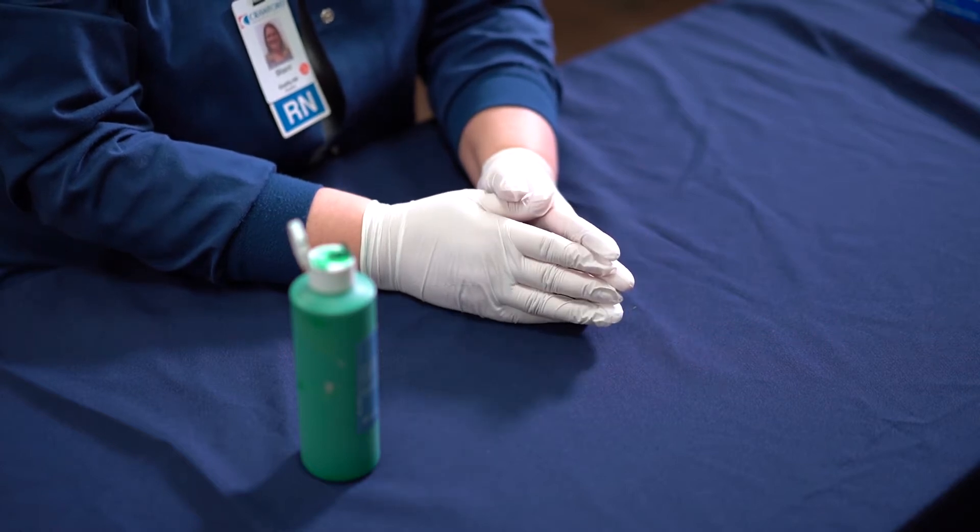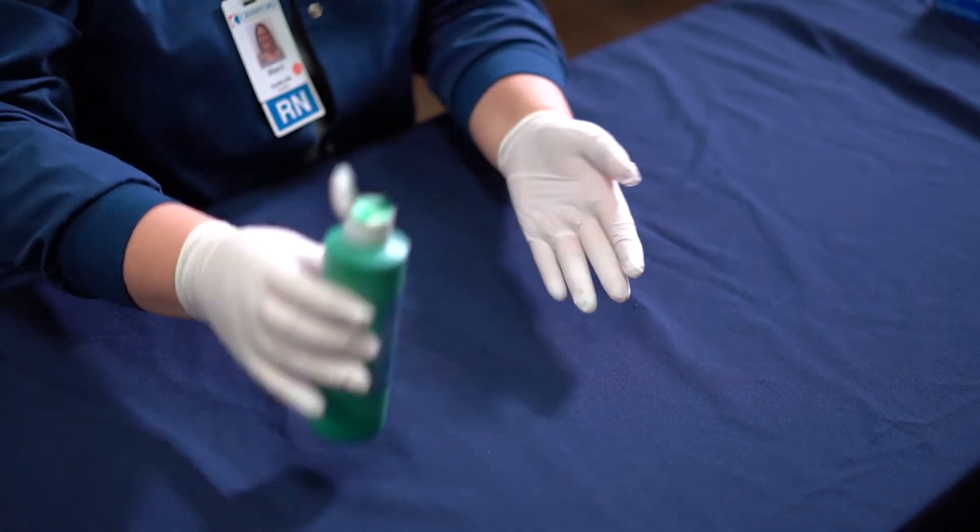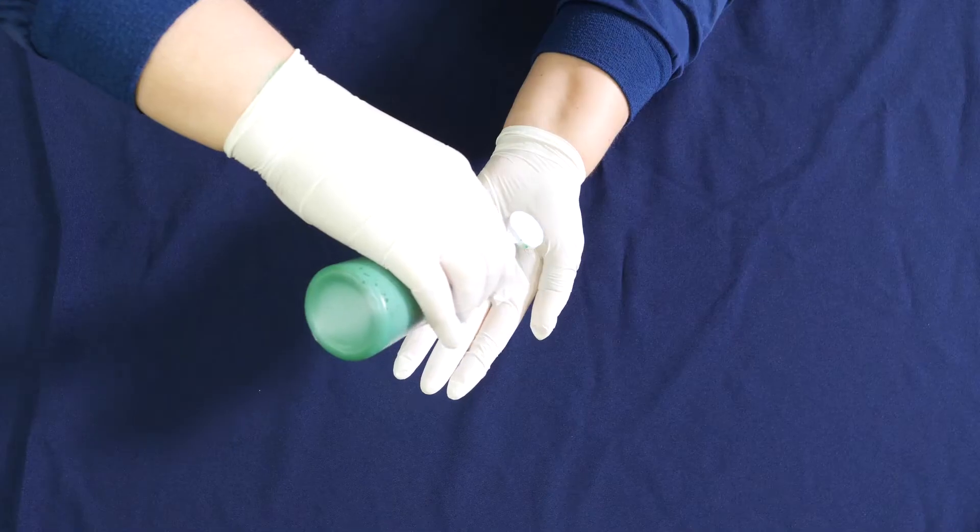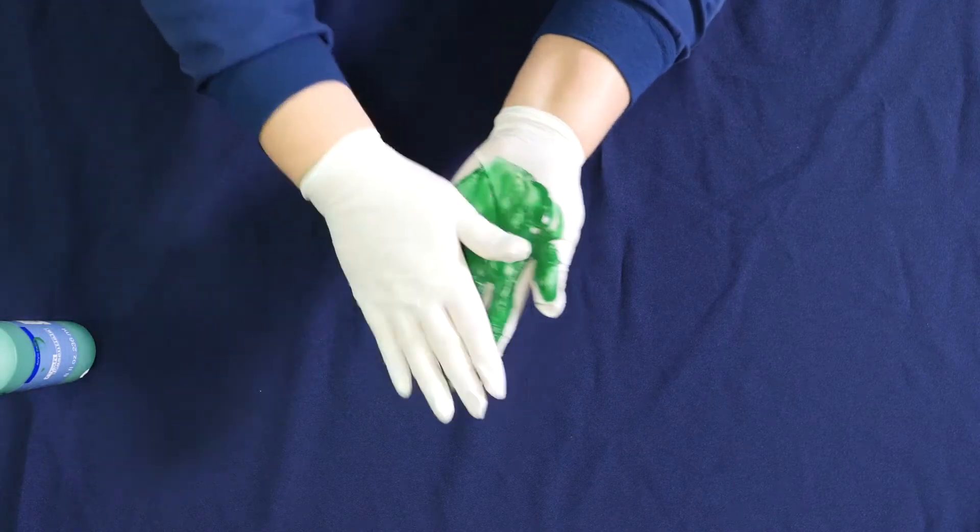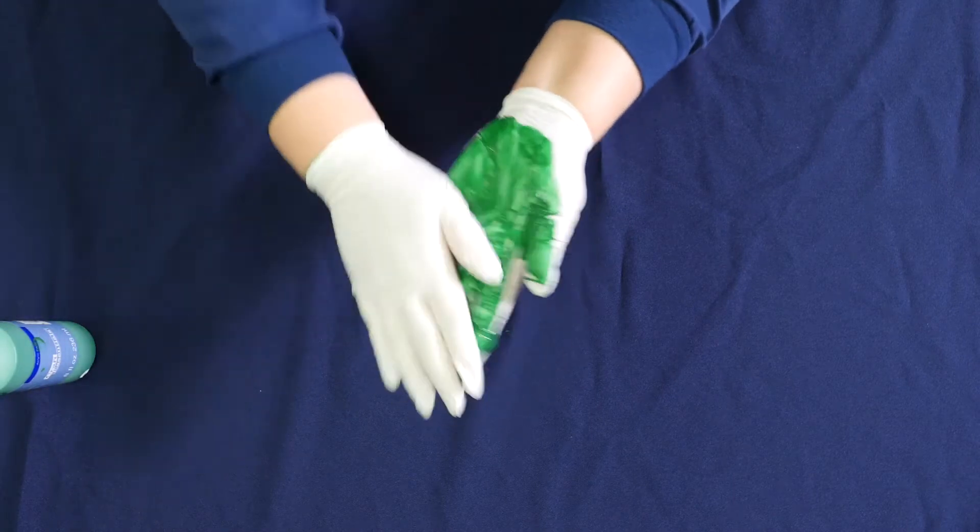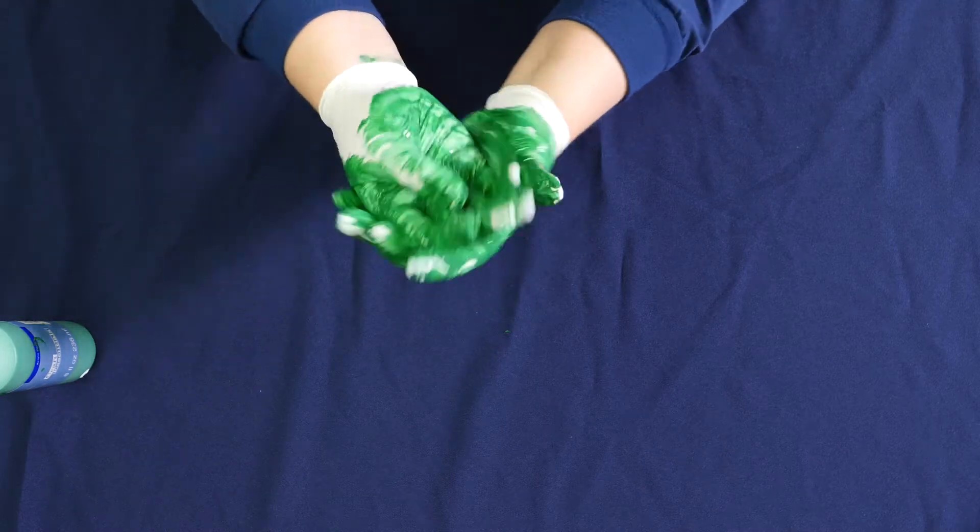First of all, what you would want to do is turn on the water, wet your hands, and then you would apply the soap. I'm using paint to simulate this here instead of water and soap and then you want to massage the soap in your hands to make sure it gets nice and lathered up and then you want to put some of that on the back of your hands.